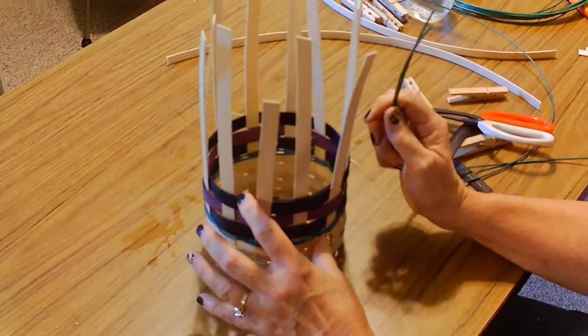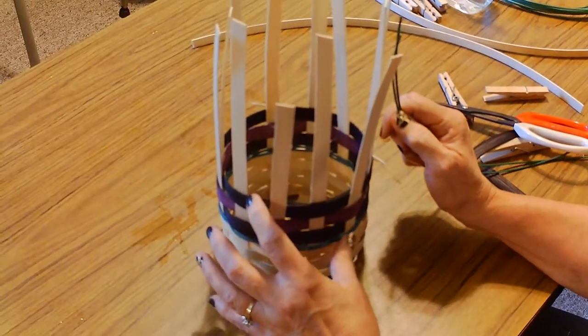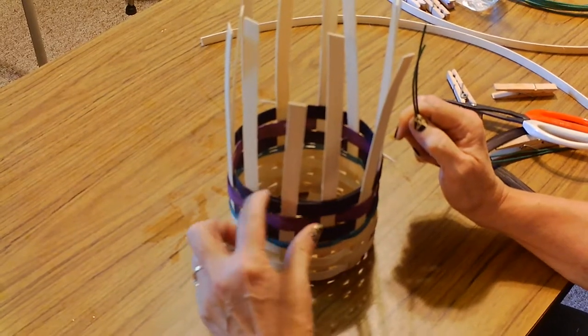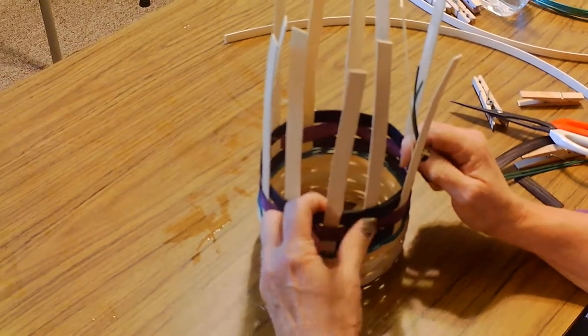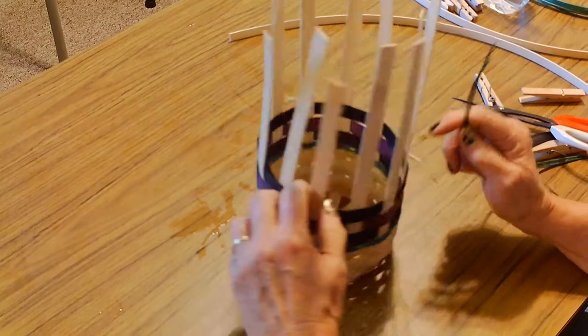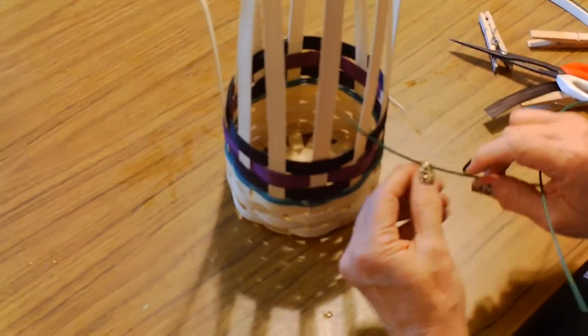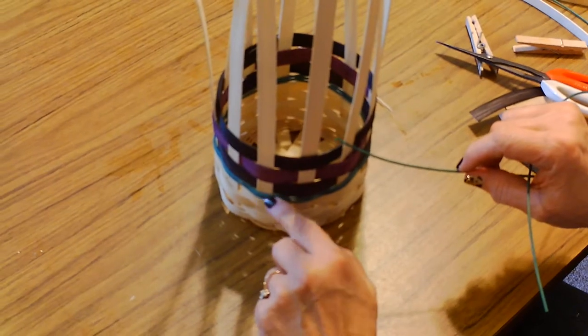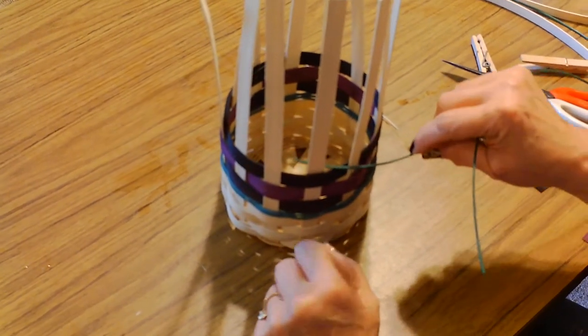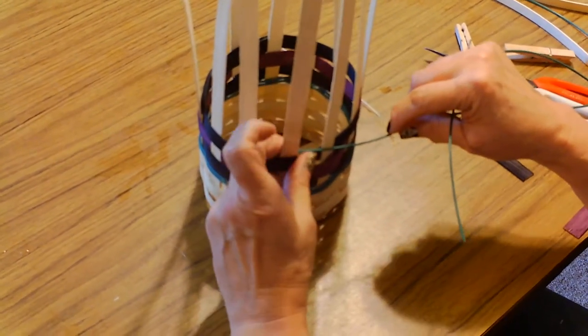Because we want to turn to a different area of the basket to start again, we go back here. This is where we started and ended that last row, so we'll go over this way. To reiterate what we did before, we start with a piece behind and then you have to hold on to it.